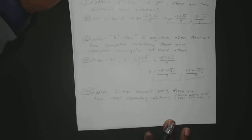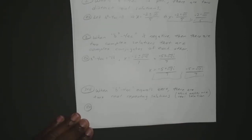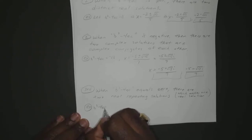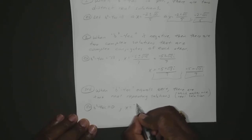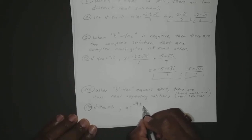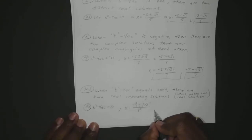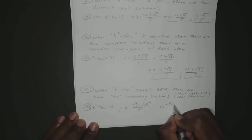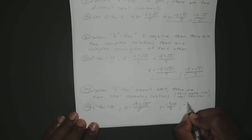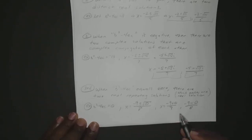Let's say for example we calculated our B squared minus 4AC and it ended up equaling 0. So B squared minus 4AC equals 0, and we have X equals negative 9 plus or minus the square root of 0 — since that's our B squared minus 4AC — all over 2A, which makes our 2A equal 8. So that gives us X equals negative 9 plus 0 over 8, or negative 9 minus 0 over 8, which are both the same: X equals negative 9 over 8.